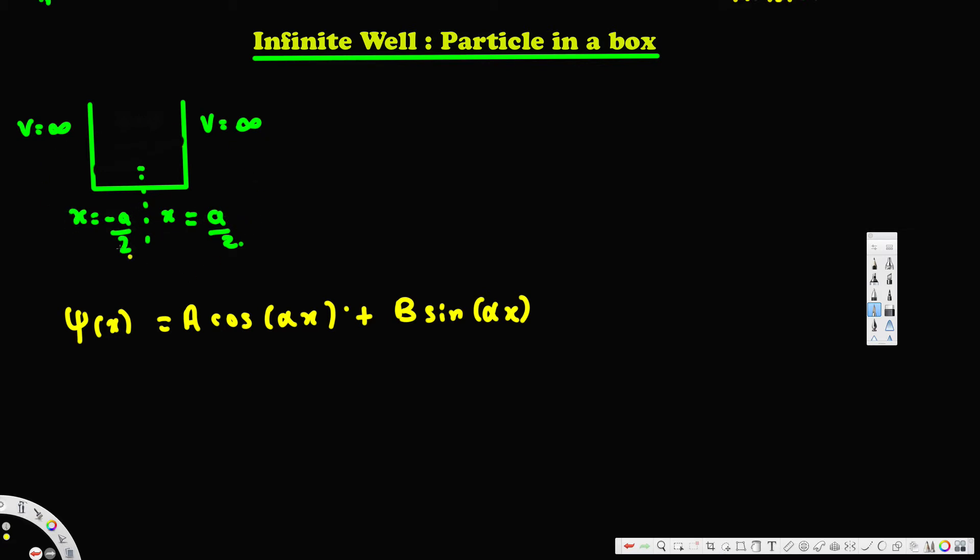So we solved and derived this equation. Here you can see our potential well is going from negative a/2 to positive a/2. Also, the potential energy function outside is infinity, and we are going to find what's going to be the energy level.